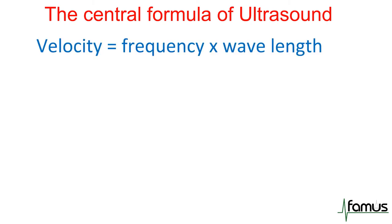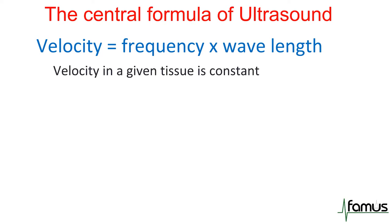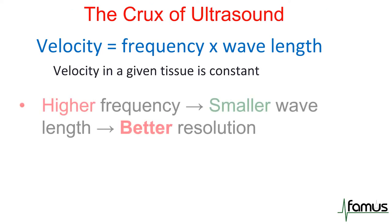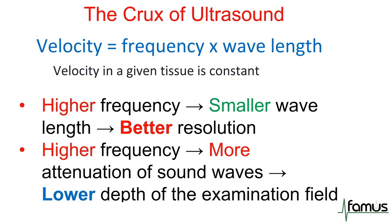Looking at the central formula of ultrasound: velocity equals frequency times wavelength, and the velocity in a given tissue is constant. What it means is that if I use a higher frequency for my ultrasound, it will give me smaller wavelengths with a constant velocity, and that results in better resolution. Unfortunately, higher frequency also means more attenuation of our sound waves, meaning we can't go as deep with our examination field.